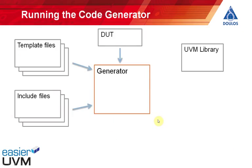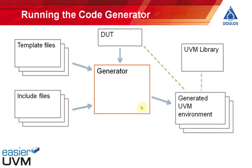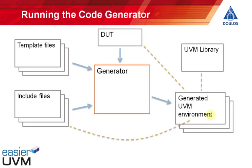Let's look at the architecture of the code generator. To run it, you point the generator at your design under test and write a template file for each of the interfaces to the DUT. The code generator then runs and generates a complete UVM environment. To make that environment run, you'll also need to provide code for drivers and monitors by writing include files. Those include files are linked into the generated code, meaning you can regenerate the code multiple times from the template files without modifying it, giving you a lot more flexibility.